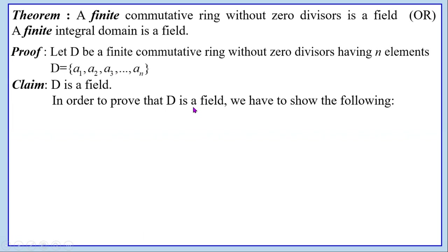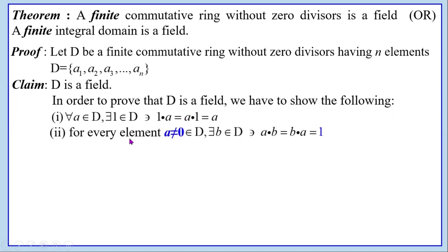In order to prove that D is a field, we have to show two things. First, for all a in D, there exists a unity element 1 in D such that 1·a = a·1 = a — that is, the multiplicative identity exists in D. Second, for every non-zero element a in D, there exists an element b in D such that a·b = b·a = 1 — that is, a multiplicative inverse exists for every non-zero element in D.